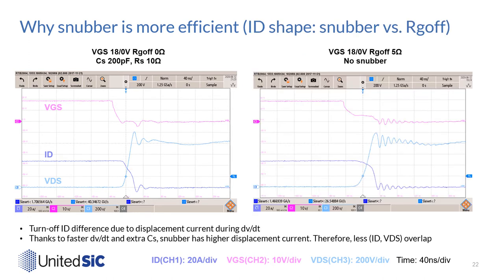Let's put snubber and high RG off turn-off waveforms side by side again. At 200V VDS, the current for snubber is 32A while for high RG off it is 41A. This difference is due to the difference in displacement current. Because snubber has higher dV/dt and more capacitance to discharge, the displacement current is higher for snubber. Therefore, there is less voltage and current overlap. Now we understand why snubber is more efficient at turn-off.